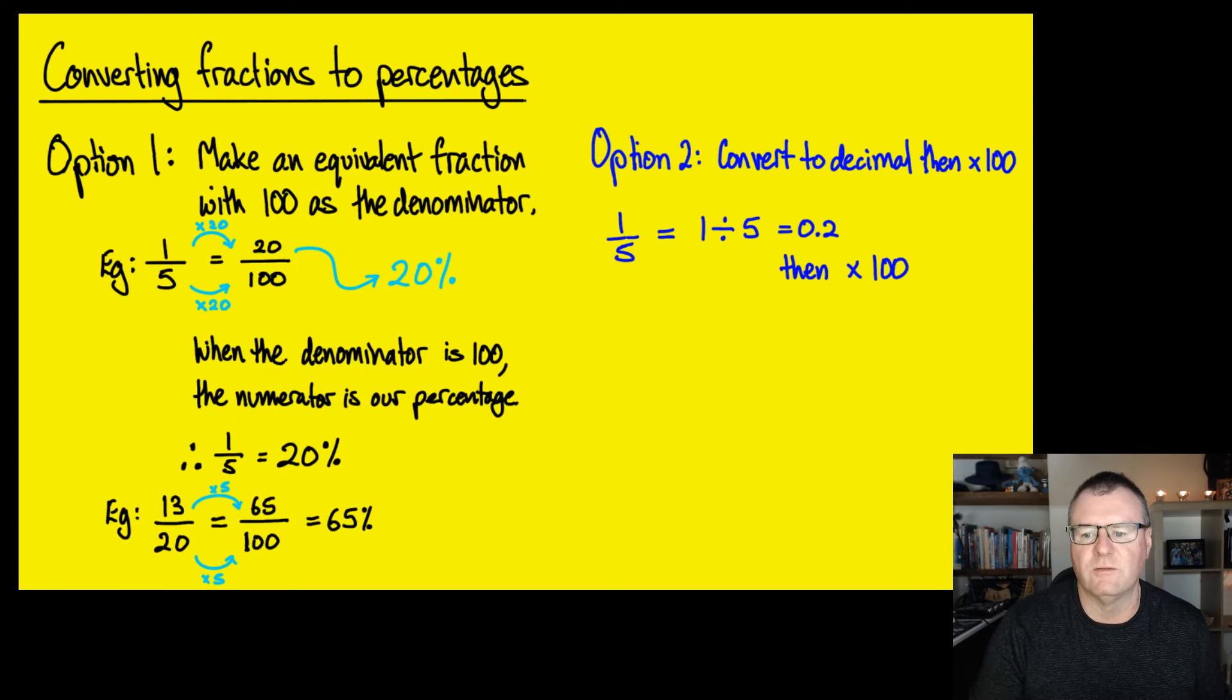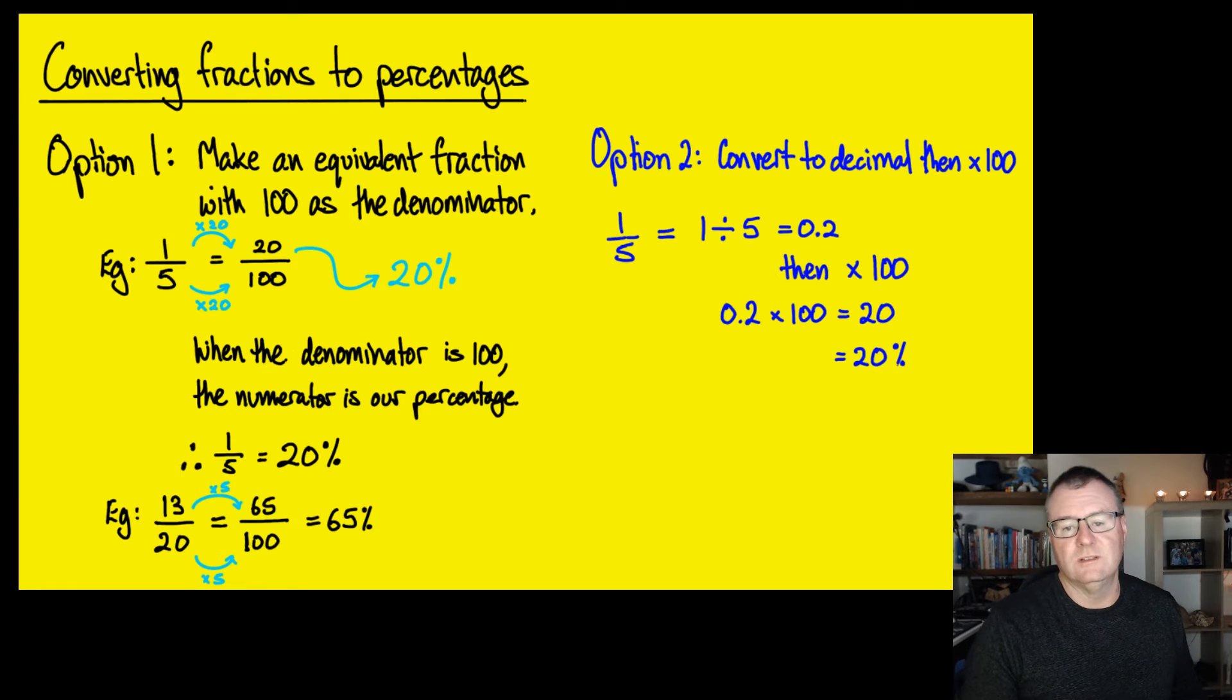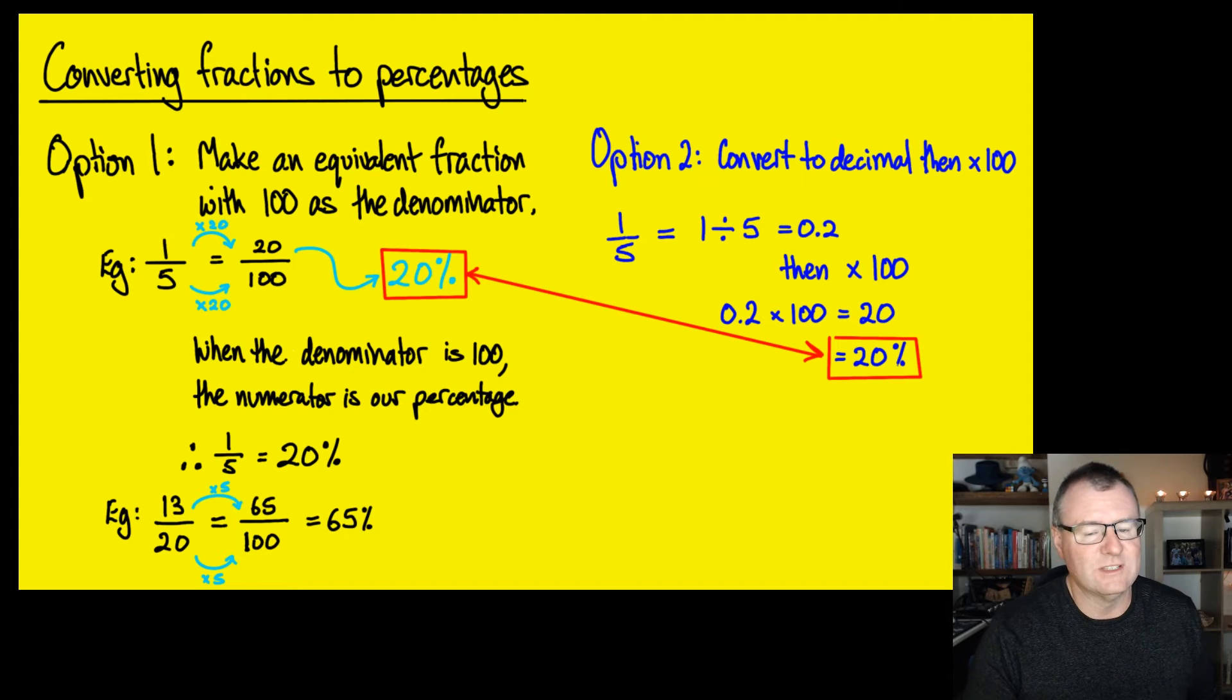and I just times it by 100. I take the decimal, I multiply it by 100, and I get 20. And if I have a look, 20% is the same answer that I got in the first example, so I know that that worked.